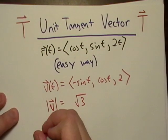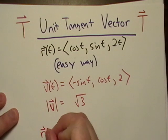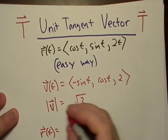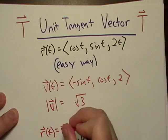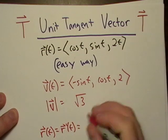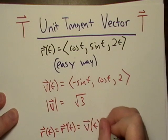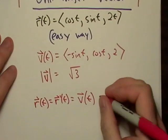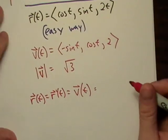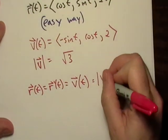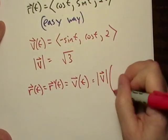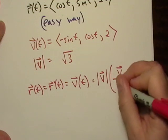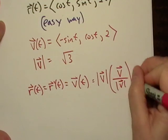Now remember, if I take r of t and r prime of t gives me the forward velocity vector, then recall that I can express this thing as a product of its magnitude and its direction, okay?